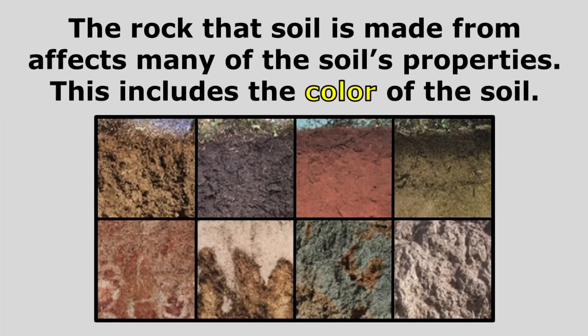The rock that soil is made from affects many of the soil's properties, and this includes the color of the soil. So one of the reasons soils can be different colors is because they can contain different minerals from different types of rocks.